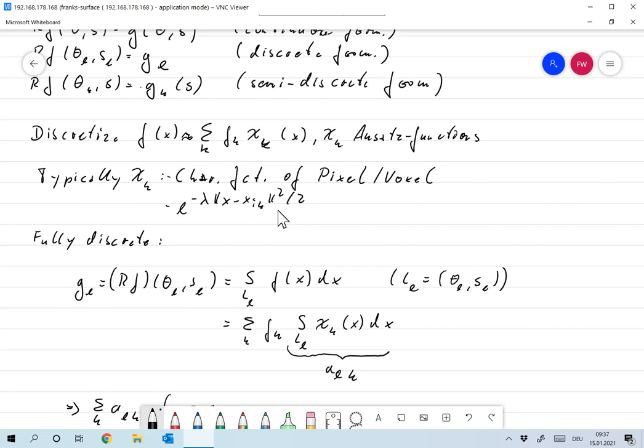where ξ_K are positions in the reconstruction area. We will not look at this one, but rather we'll always think about χ_K as the characteristic function of a pixel.